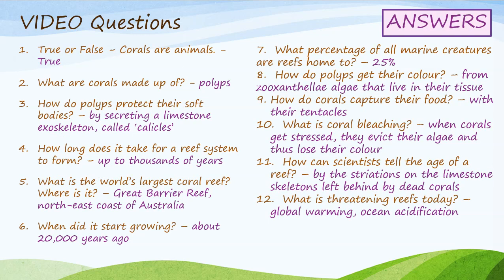Welcome back. Here are the answers to our video questions. One: true or false — corals are animals. This is true. Two: what are corals made up of? Polyps. Three: how do polyps protect their soft bodies? By secreting a limestone exoskeleton called calicles. Four: how long does it take for a reef system to form? Up to thousands or even tens of thousands of years. Five: what is the world's largest coral reef and where is it? It's called the Great Barrier Reef and it's along the northeast coast of Australia. Six: when did it start growing? About 20,000 years ago.